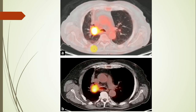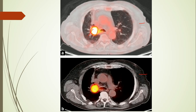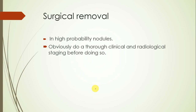Here is an example of a PET scan. This is the lung window and this is the mediastinal window. We can clearly see the very high activity level of the tumor — this is a malignant nodule. The next step would be doing a bronchoscopic biopsy to confirm it, followed by surgical removal, which is the first-line approach if the lesion has a very high probability of being malignant.